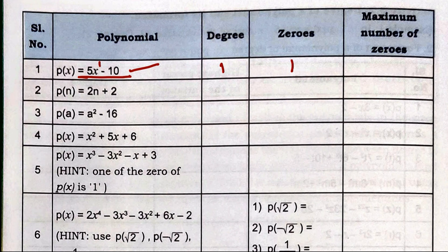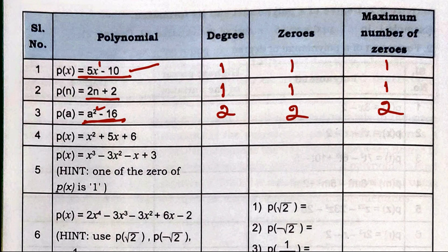For 2n + 2, the degree is 1 and maximum number of zeros is one. For x² − 16, the degree is 2 and maximum number of zeros is two. For x² + 5x + 6, the degree is also 2, so maximum number of zeros is two — meaning x has two possible values.